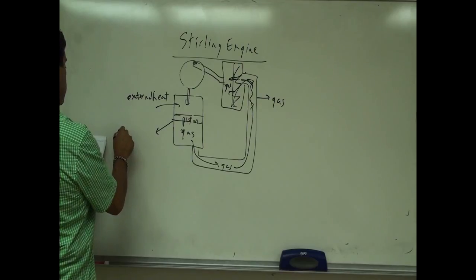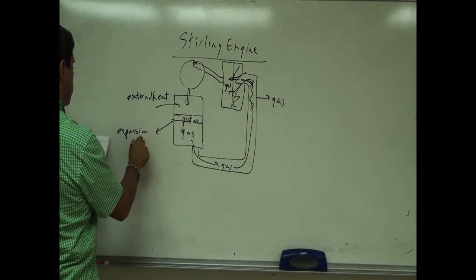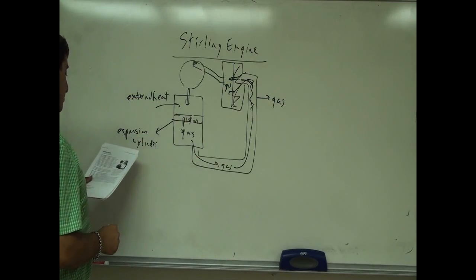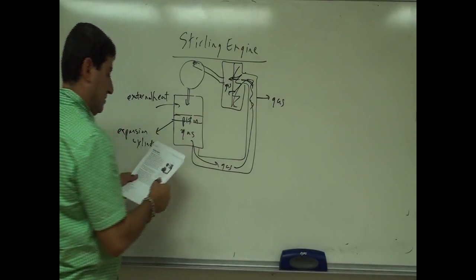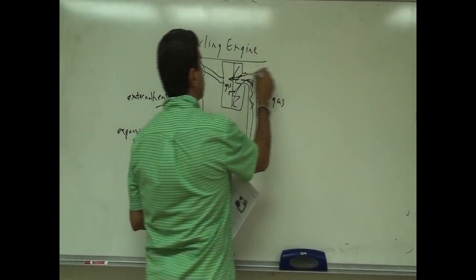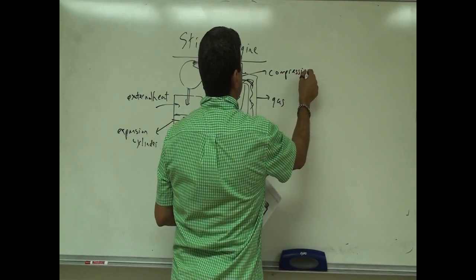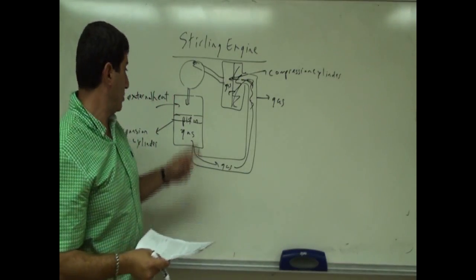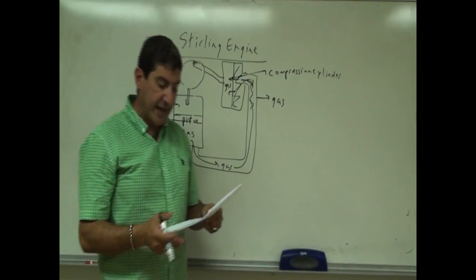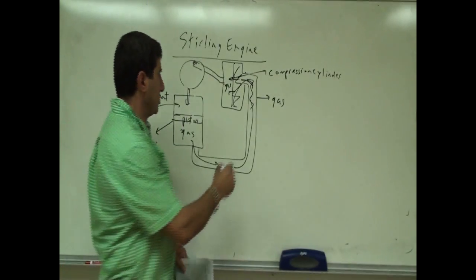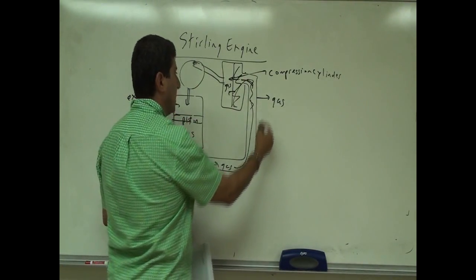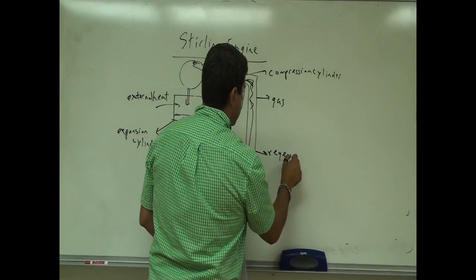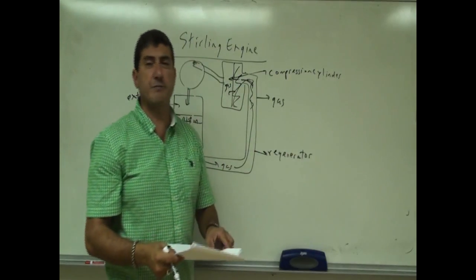There's an expansion cylinder, which is kept hot by a heat source, and then there's the compression cylinder, which is cooled. So: hot and cold. The passage between the two cylinders contains the regenerator — this is how you regenerate the energy from hot to cold. The gases have to flow from one to the other through the regenerator.